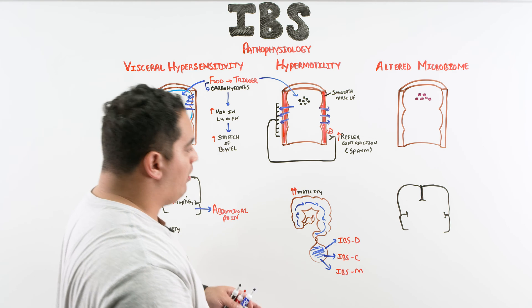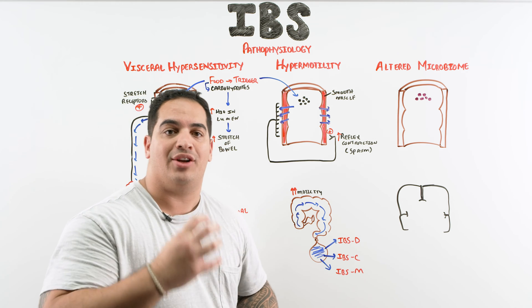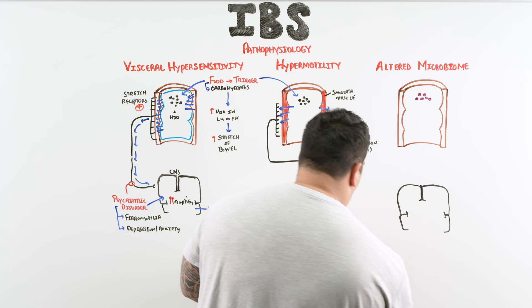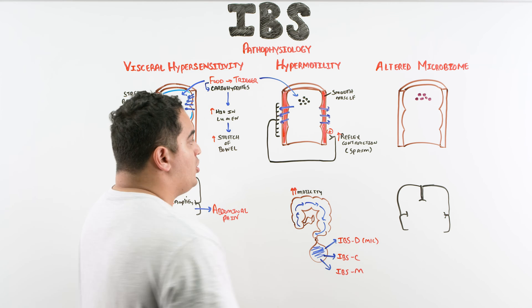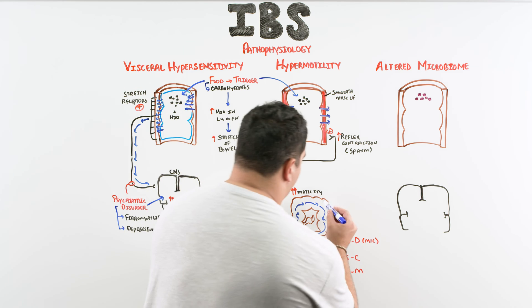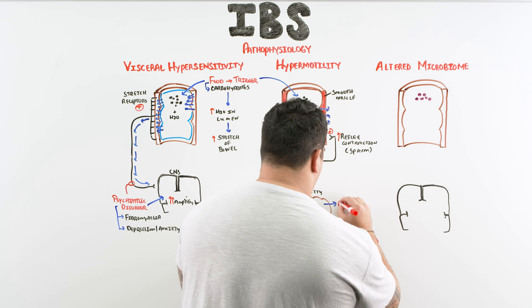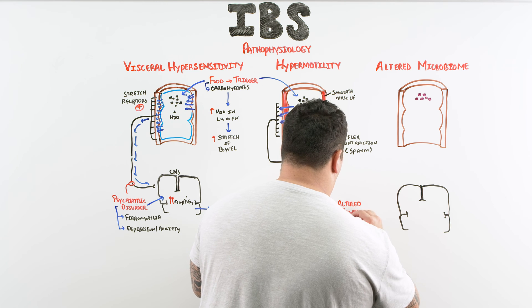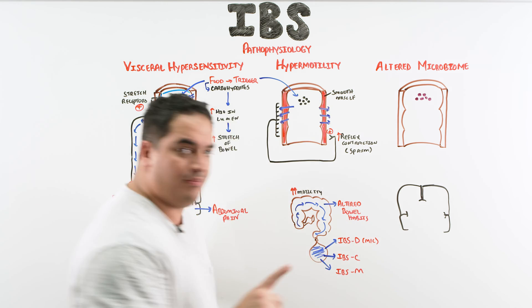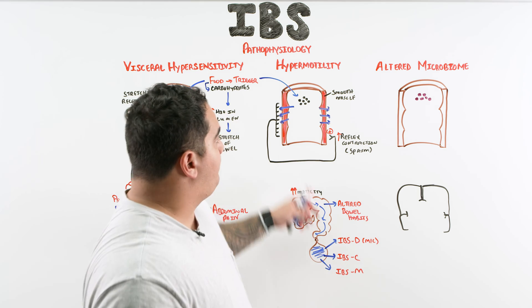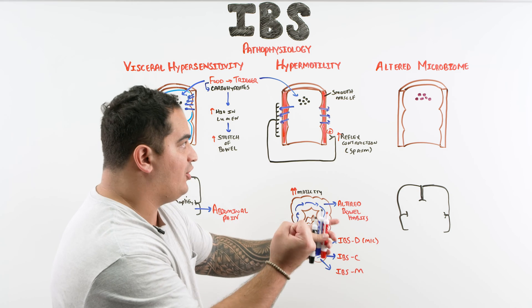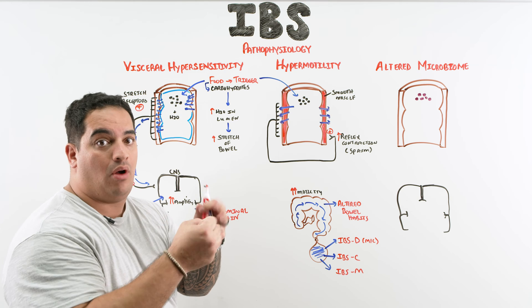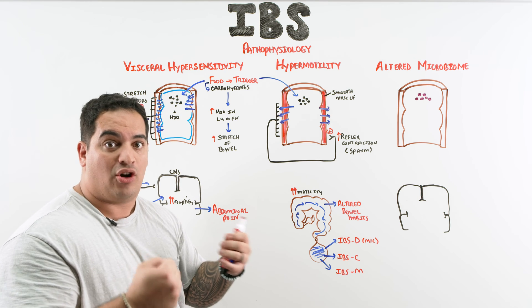The biggest thing to remember is that these patients have alterations in their bowel habits. By far the most common type is IBS-D. So if I see a patient with abdominal pain and altered bowel habits, I'm really starting to think about IBS. To summarize: hypermotility causes reflexive intense contraction, and hypersensitivity means the nerves within the bowel wall have increased sensitivity to stretch, both causing pain.